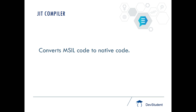JIT compiler is a component present in CLR which is used for converting MSIL code to native code. This second-time compilation process is taken care of by the JIT compiler, converting MSIL code to native code, which is the target operating system code, helping in achieving platform independency.